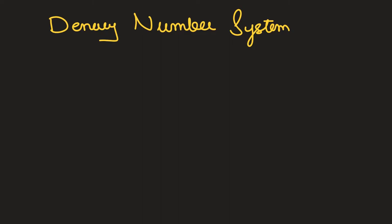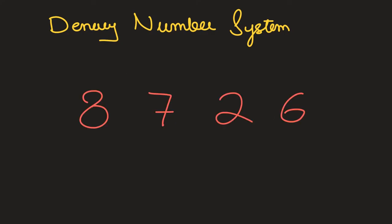Moving to our first number system — the denary or decimal number system, which we were taught to use. It uses base 10, with possible digits of 0 through 9. Let's consider the number 8726.